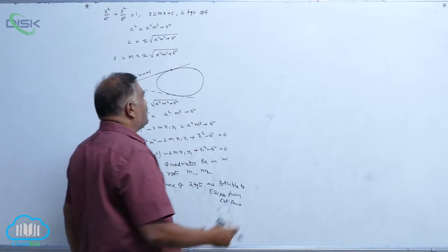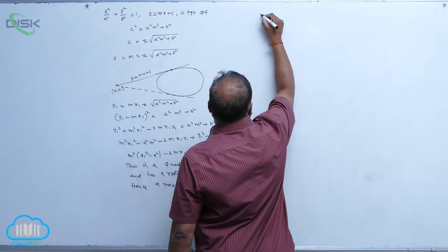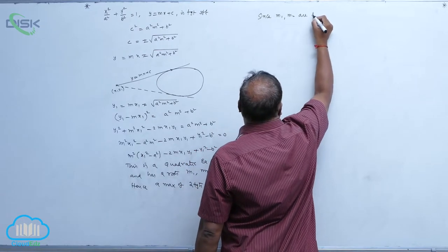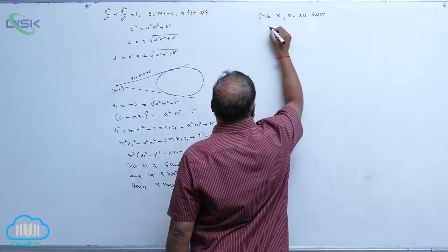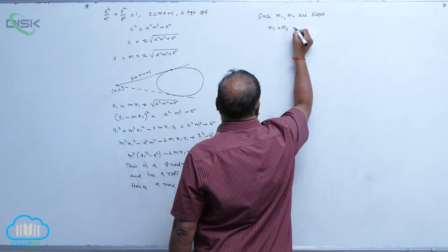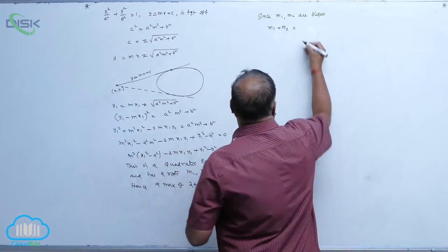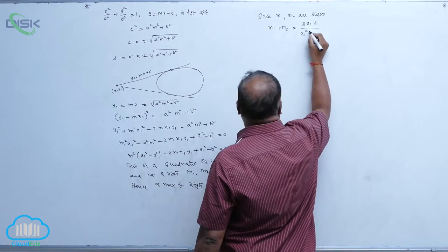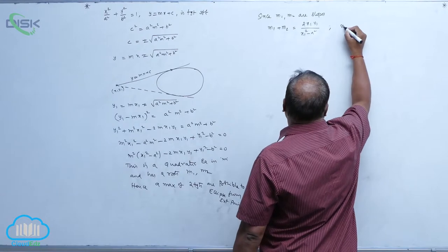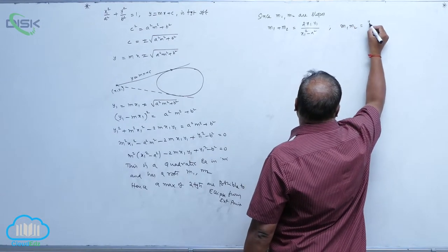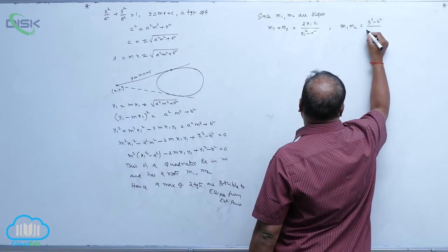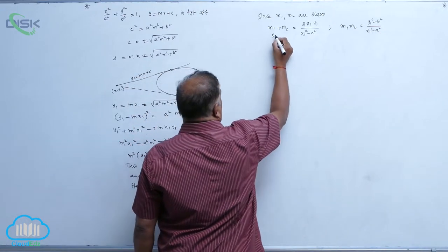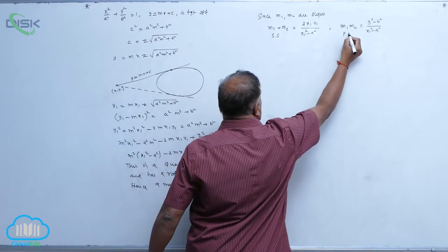Since m₁ and m₂ are the roots, we can write: m₁ + m₂ (sum of slopes) = 2x₁y₁ / (x₁² - a²), and m₁·m₂ (product of slopes) = (y₁² - b²) / (x₁² - a²).